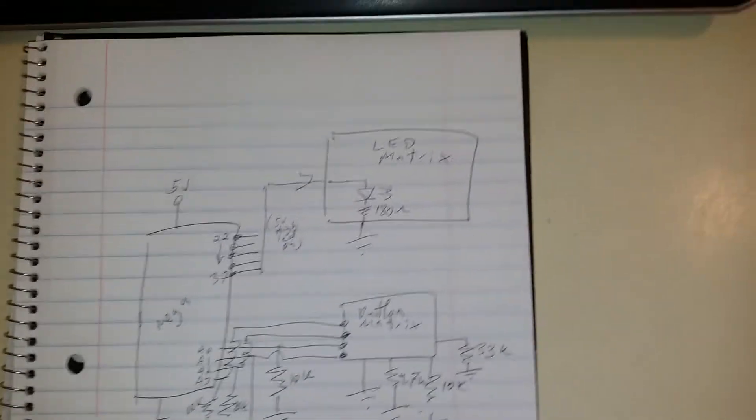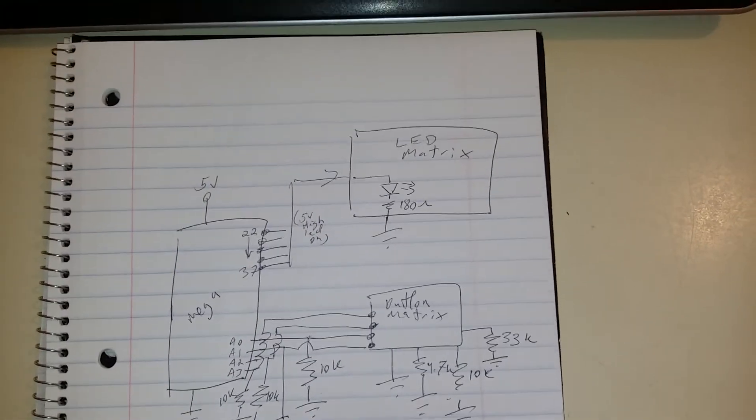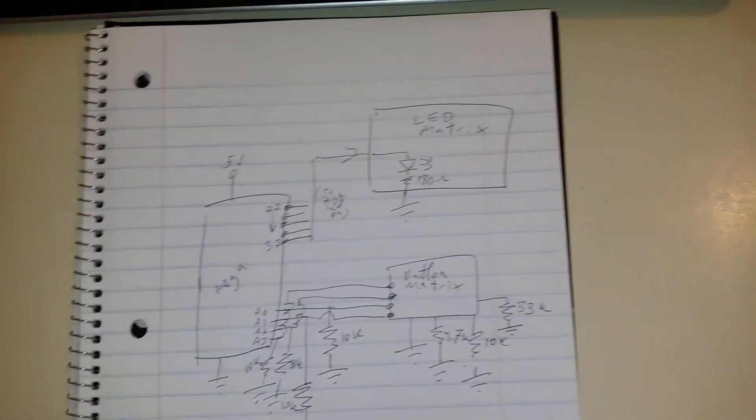And then the Mega will output on pins 22 through 37 a high on one LED only.